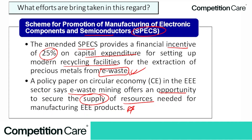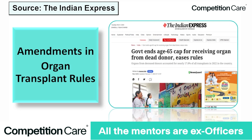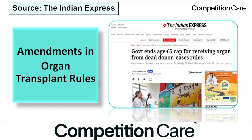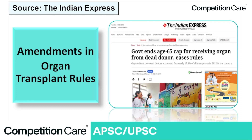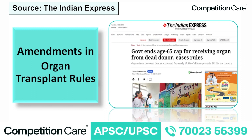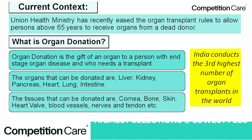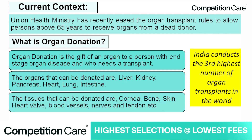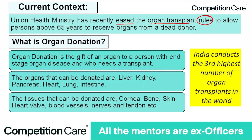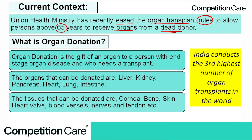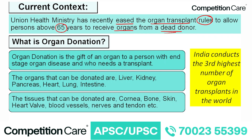Our last topic is from The Indian Express: amendments in organ transplant rules, important from GS Paper 2 and GS Paper 3 health segment. The current context is that the Union Health Minister has recently eased the organ transplant rules to allow persons above 65 years to receive organs from a deceased donor.